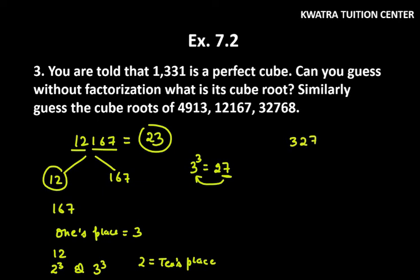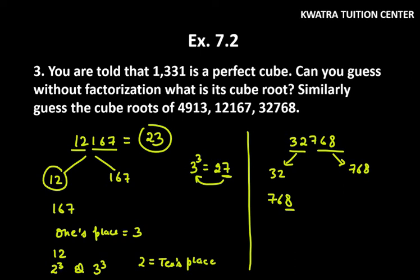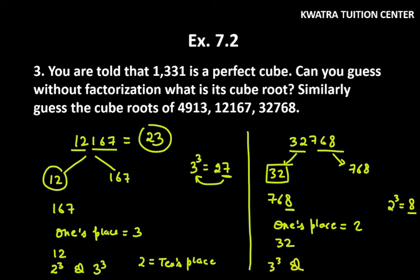Let's do the last one: 32768. Make the pairing — from the right, the group is 768, and the remaining part is 32. Now 768 ends in 8. Which cube ends in 8? 2 cubed is 8, which ends in 8. So the ones place is 2. Now, 32 lies between 3 cubed (27) and 4 cubed (64). The smaller number is 3, so the tens place is 3. Therefore, the cube root of 32768 is 32.